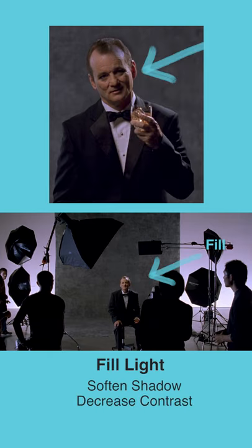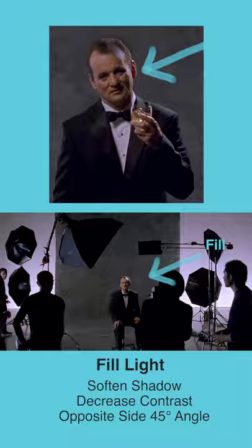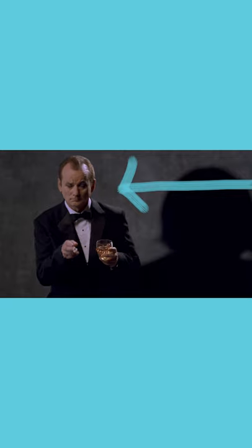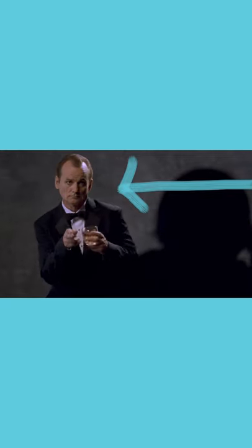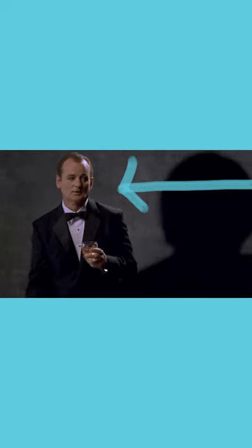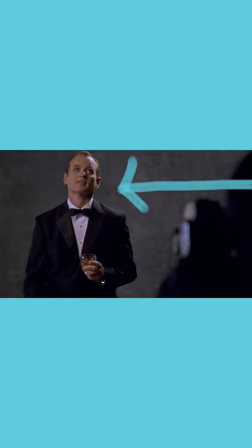To soften the shadow and decrease contrast, a fill light, which is usually less powerful than the key, is set up on the other side of the face, typically at around 45 degrees. This is used to fill in or illuminate the face enough so that there is a controlled level of contrast.